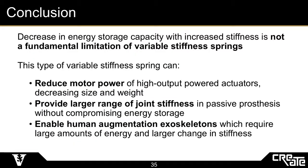In conclusion, this work found that a decrease in energy storage capacity with increased stiffness is not a fundamental property of variable stiffness springs. We are able to show that a controllable volume air spring is an example of a variable stiffness spring that falls under a specific subclass that overcomes this tradeoff. By being able to increase both simultaneously, it has several implications: if used in an actuator, this spring can reduce the motor power of conventional high-output powered actuators to decrease size and weight; in passive prosthetic devices, it can provide a larger range of joint stiffnesses without compromising energy storage; and it can potentially enable human augmentation exoskeletons by providing an increasing energy reservoir with a larger change in stiffness.